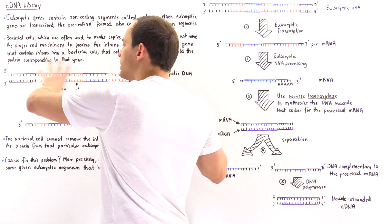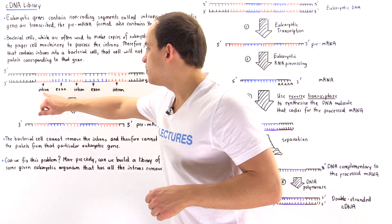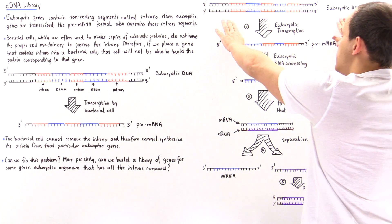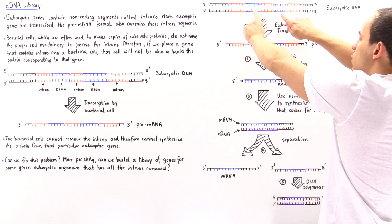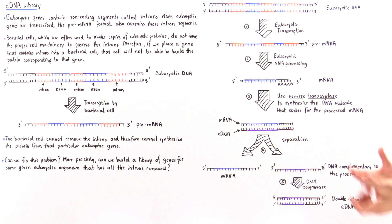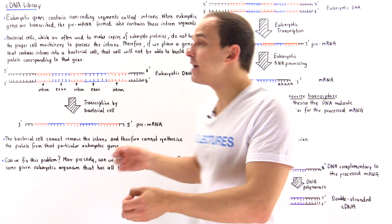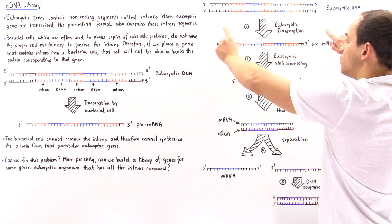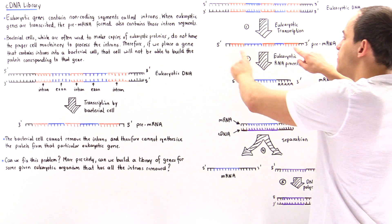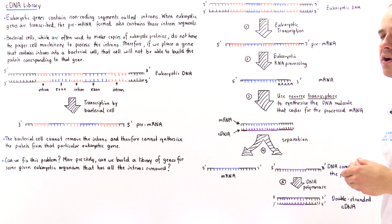Let's take this eukaryotic DNA molecule that contains introns and exons — this is our DNA library, with introns, exons, and the eukaryotic gene. The first step is to allow that eukaryotic cell to transcribe this DNA molecule into the single-stranded pre-mRNA molecule. 'Pre' simply means it has not yet been processed by that eukaryotic cell.